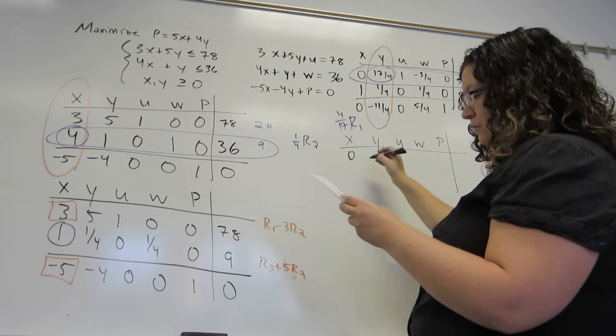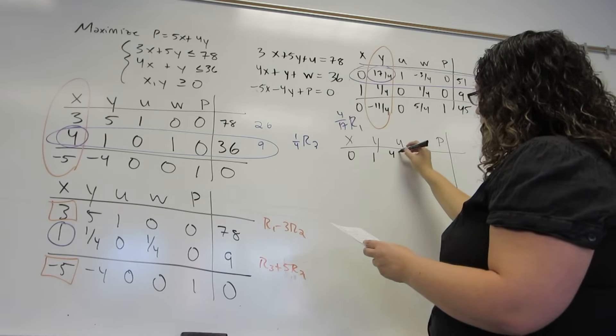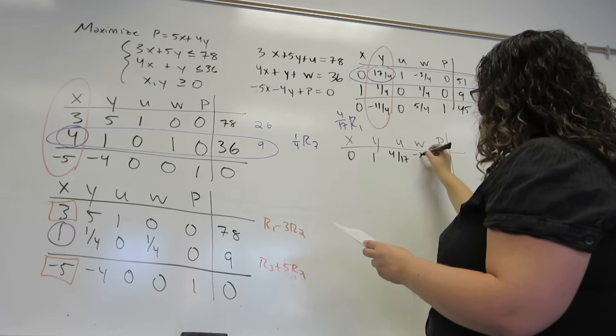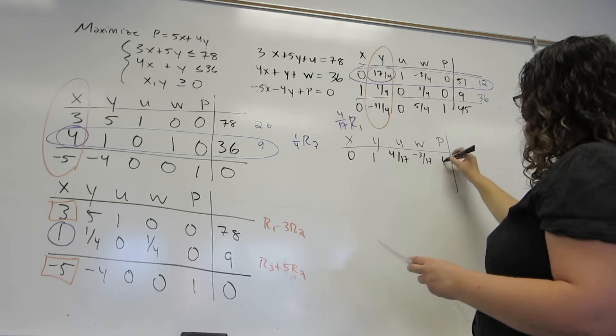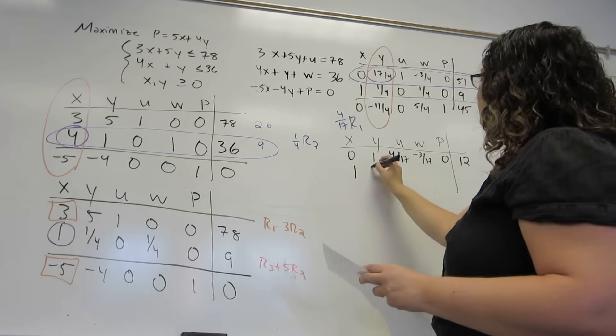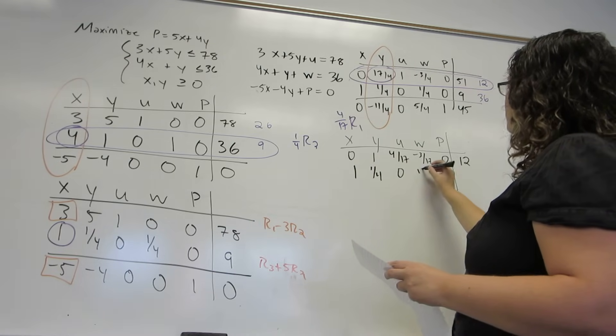So I end up with 0, 1, 4 seventeenths, minus 3 seventeenths, 0, and 12. And everything else will stay the same.